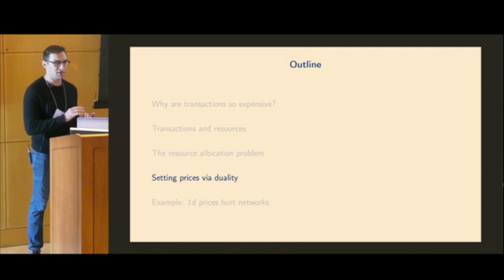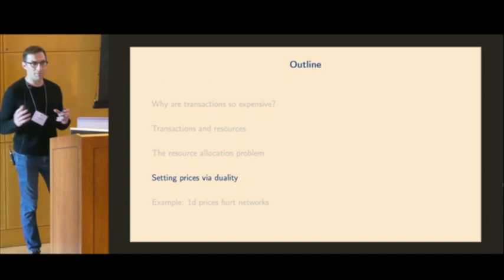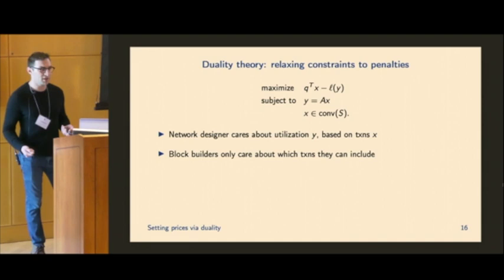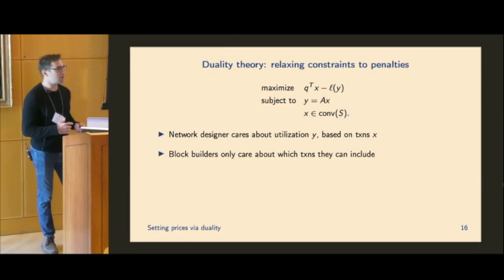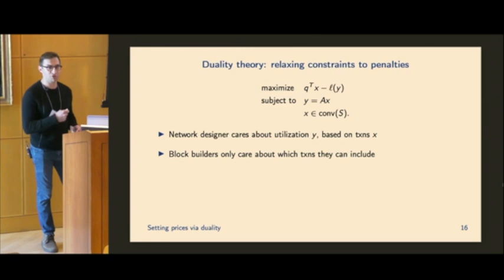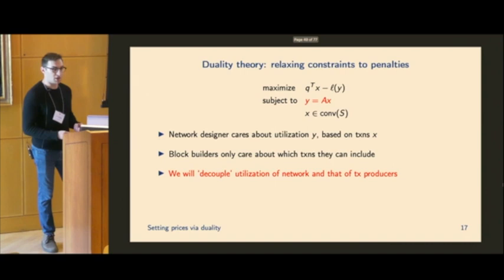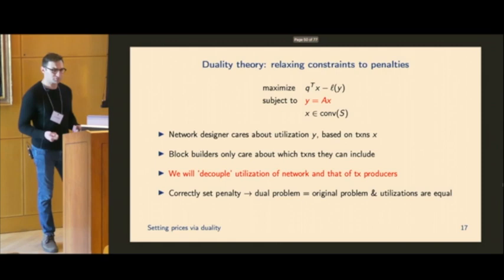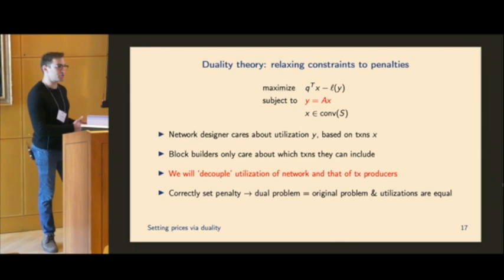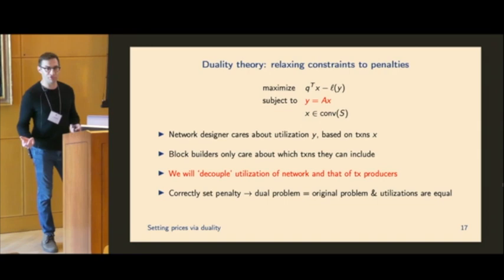Fortunately, we are going to be able to look at the dual of this and kind of pull from very classical techniques in convex duality theory to decouple this problem to something that's actually tractable to solve kind of in a live system. At a very high level, what we're going to do is we're going to take the constraints and relax them to penalties. And so just kind of to give some intuition, the network designer only cares about the resource utilization Y. So the network designer only cares about what transactions are included insofar as they imply a particular resource utilization. Of course, block builders, users, transaction producers, et cetera, care about what transactions they can actually include because that determines their own P&L. So we're going to decouple the utilization of the network and that of transaction producers. And for that, we're going to essentially introduce some penalty for violating this constraint, which will be related to prices. Of course, standard results show that if we set this penalty correctly, the dual problem has an optimal value that's equal to the original problem, and these utilizations are equal.